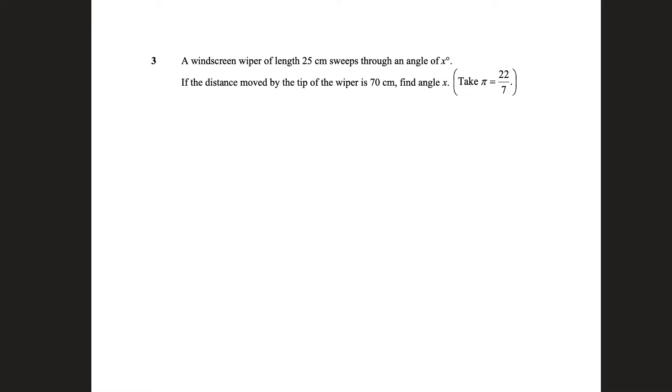So let's read the question: a windscreen wiper of length 25cm sweeps through an angle of x degrees. Let's just try to visualize this. I have some wiper, like a car wiper. It tells me that it sweeps through an angle of x degrees, so maybe it doesn't go all the way, maybe it goes to here. So pardon the drawing, something like that. This is x degrees, and the wiper is of length from the center, 25cm.